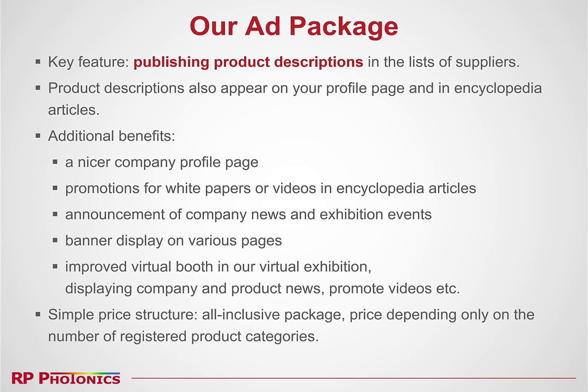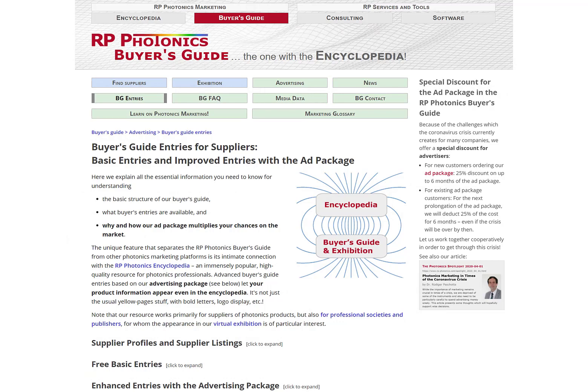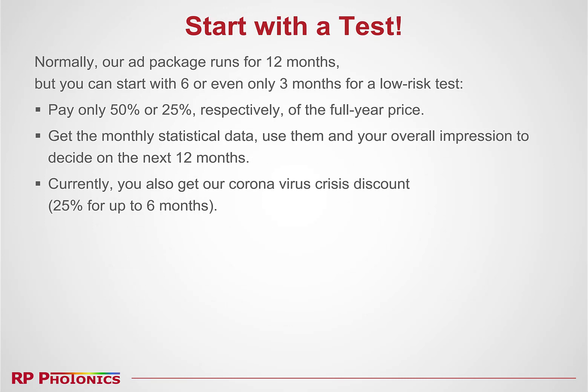For the ad package we have a very simple price structure — it's a basically all-inclusive package, with the price depending only on the number of registered product categories. On our website you find much more details. If you want to see exactly what the buyer's guide entries look like without and with the ad package, we have media data published. Normally our ad package runs for 12 months, but initially you can start with 6 or even only 3 months for a low-risk test, paying only 50% or 25% respectively of the full year price. You get monthly statistical data to help you decide on the next 12 months.